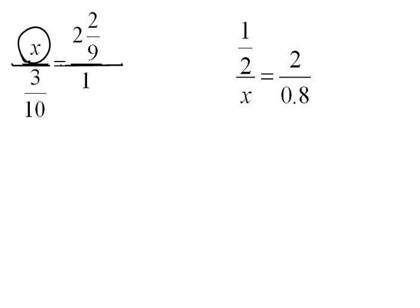Here's where our cross product technique is really going to come in handy. We're going to multiply the cross product here, which would be x times 1, and that's supposed to equal this cross product, which is 3 tenths times 2 and 2 ninths.